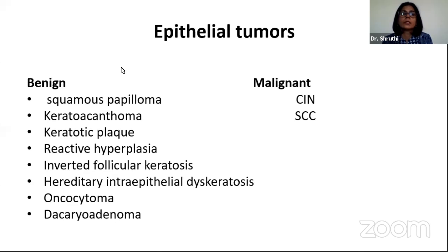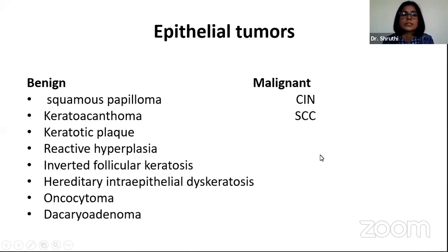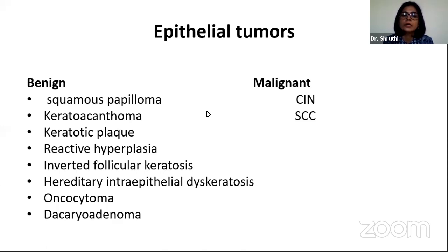In the epithelial tumors, we have benign and malignant. We will be concentrating mainly on the malignant variety, that is ocular surface squamous neoplasia. In the benign category, we have squamous papilloma, keratoacanthoma, keratotic plaque, reactive hyperplasia, inverted follicular keratosis, hereditary intraepithelial dyskeratosis, oncocytoma, and acroadenocarcinoma.